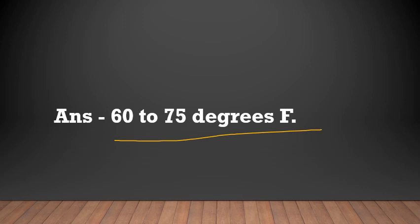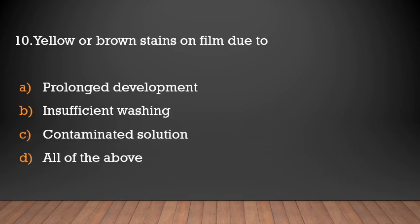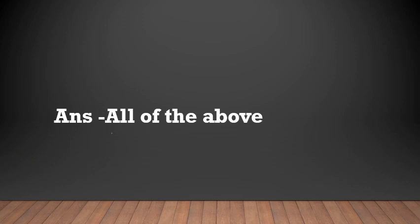Yellow or brown stains on film are due to — options: prolonged development, insufficient washing, contaminated solution, all of the above. Answer: all of the above. Yellow or brown stains on film are caused by prolonged development, insufficient washing, and contaminated solution.